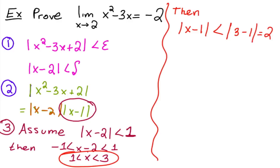Now why 3? Well, notice that the biggest x can be is 3. So that means that the biggest x minus 1 can be is 2, right?